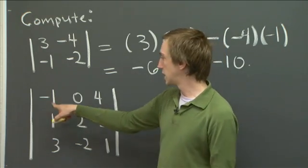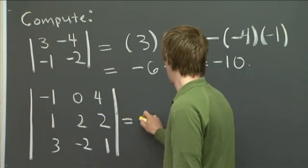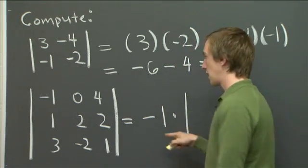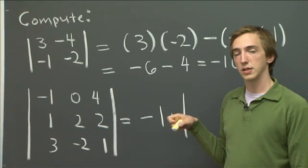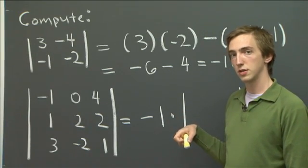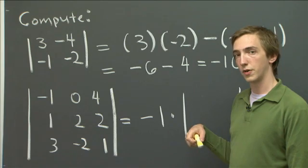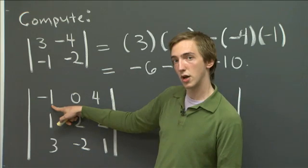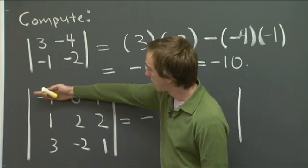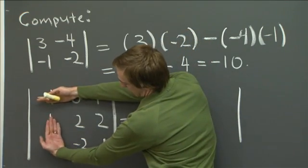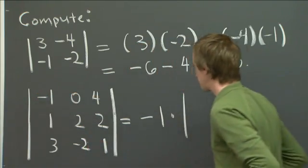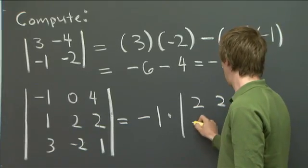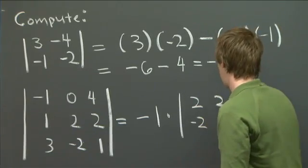So what that means is we take the very first entry, minus 1. And now we need to multiply by a 2 by 2 determinant, which we get by covering up the row and the column corresponding to our first entry. So our first entry was minus 1. And what we need to do is cover up the row and column containing that. And we have this little 2 by 2 matrix here. And so we get 2, 2, minus 2, 1.